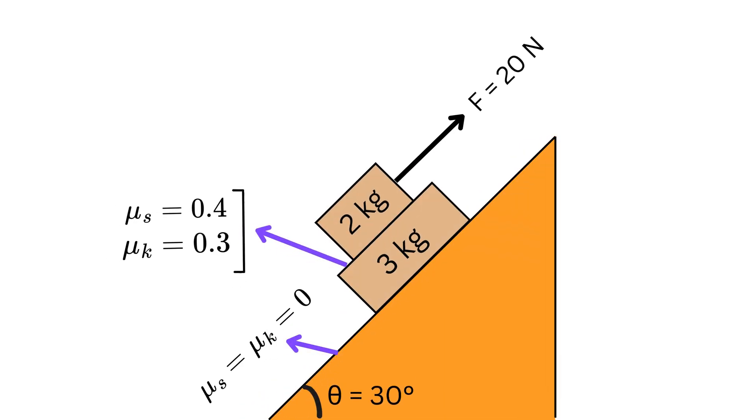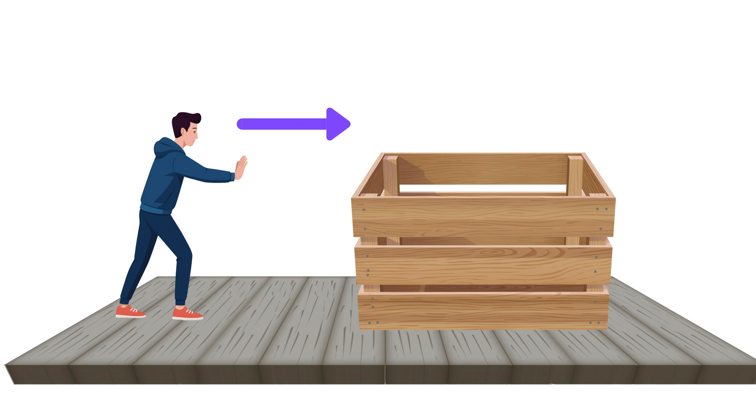Today we will be solving a nice question related to two block systems on an inclined plane with friction. Imagine pushing a heavy box on the floor. If the box does not move, the floor is resisting your push and that resistance is called friction.